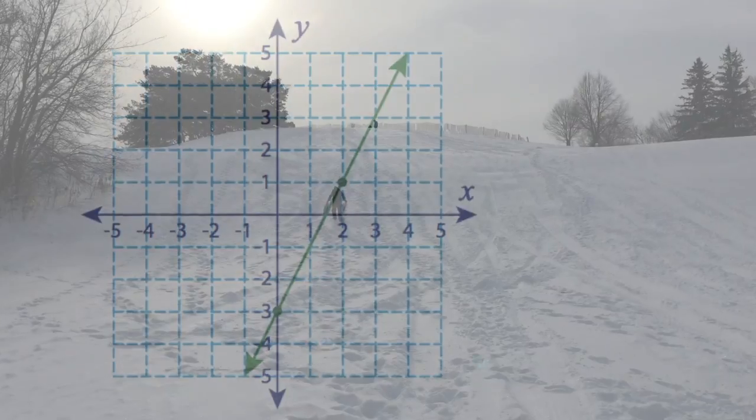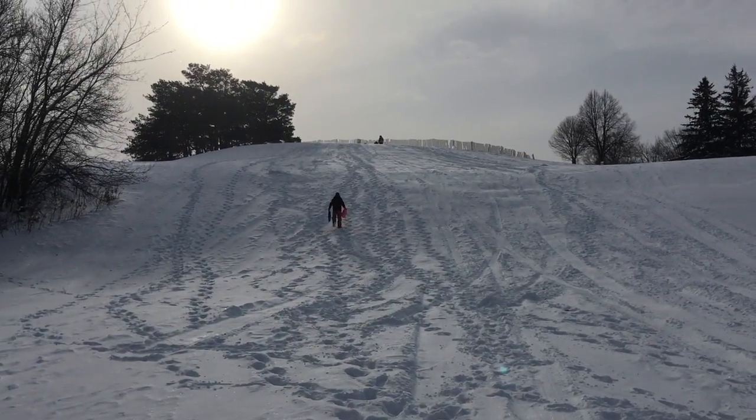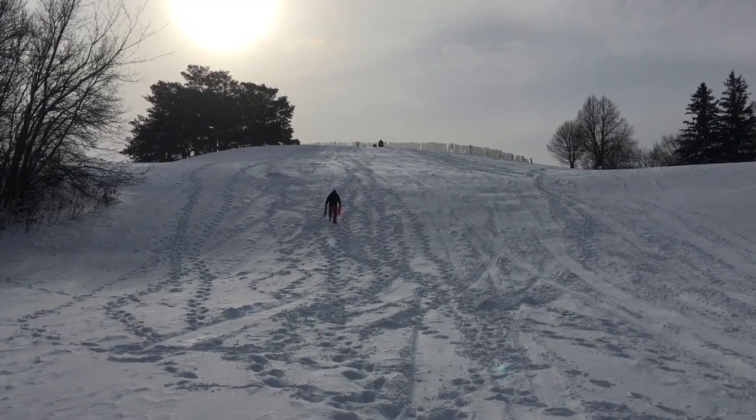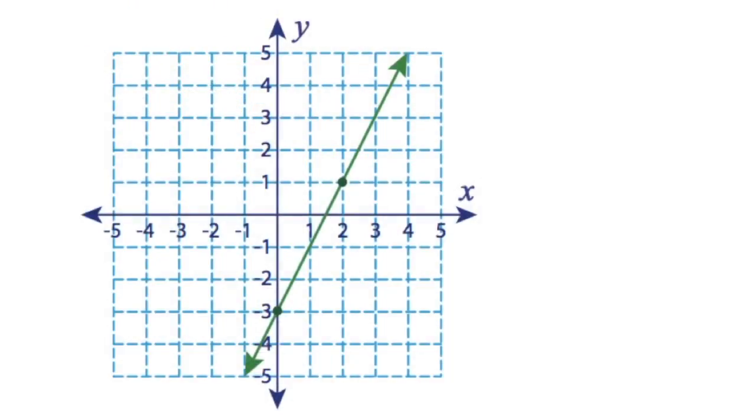So in real life, this means that when you walk up the hill, that's positive slope. And back down sliding is a negative slope.